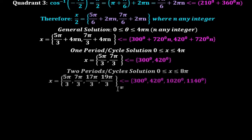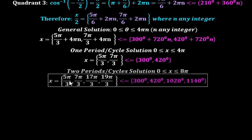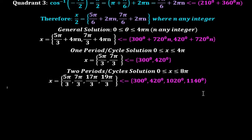The two period solution is where x is between 0 and 8π. That is 5π/3 and 7π/3 for the first cycle. The second cycle is 5π/3 + 4π = 17π/3, and 7π/3 + 4π = 19π/3. So the first cycle is 5π/3 and 7π/3, and the second cycle is 17π/3 and 19π/3. In degrees: 300°, 420°, 1020°, and 1140°.